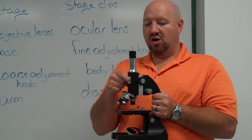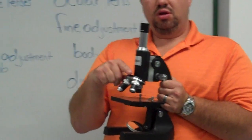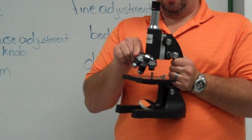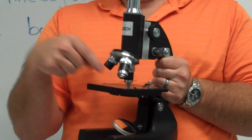Then you have this part here called the body tube. The part that jets out is known as the nose piece and that's where you're able to turn. And you turn these three lenses.